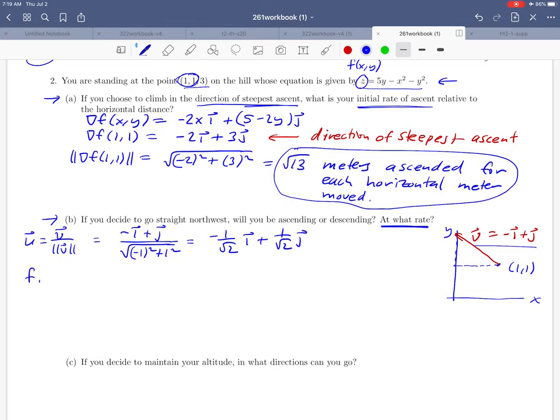Okay and so the directional derivative which is going to measure our rate of change is going to be the gradient dotted with the u that we just got. Okay so the gradient we already calculated again that's sitting up here in part a. So negative two i plus three j. We're going to dot that with the u that we just wrote down. Okay do the calculations and let's see we're going to get negative two times negative one over root two. That's two over root two and then three times one over root two is three over root two.